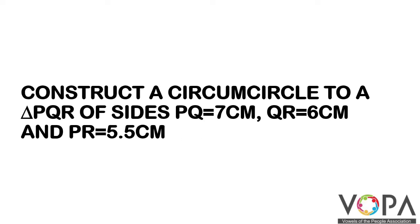Construct a circumcircle to triangle PQR with sides PQ equal to 7 cm, QR equal to 6 cm, and PR equal to 5.5 cm.